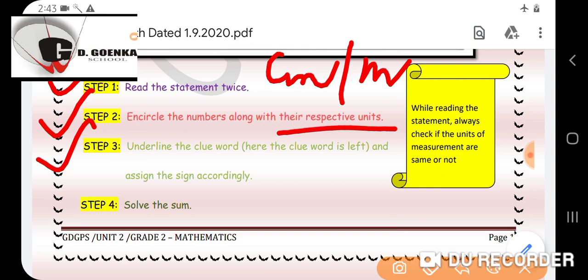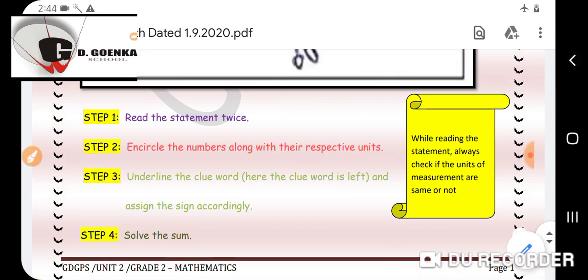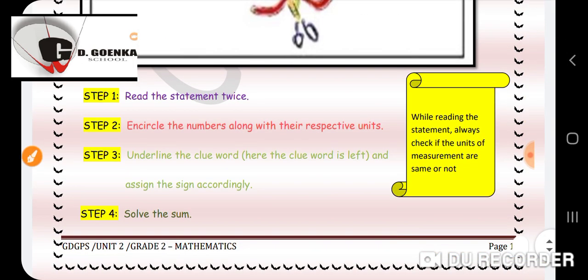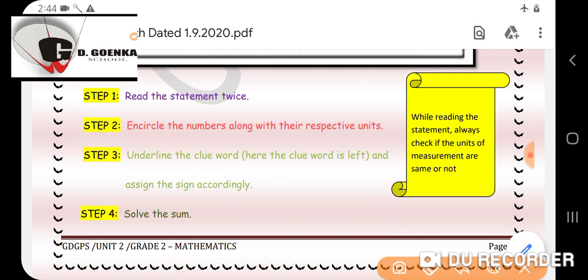Step number 3: underline the clue word. In this example my clue word was left. Is it okay my dear Goinkans? And assign the sign accordingly. When I will underline the clue word then I will get which sign I have to use, whether it is a plus sign, addition sign or a subtraction sign. And the last step is then we have to solve the sum.